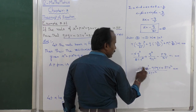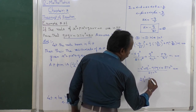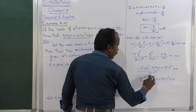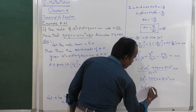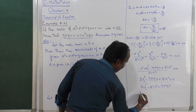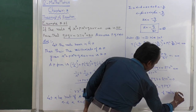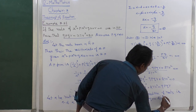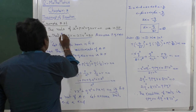Simplifying: -q³ + 3q³ gives 2q³, so we have 2q³ - 9pqr + 27r² = 0. Moving the negative term to the right side: 2q³ + 27r² = 9pqr. Therefore, the condition for the roots is 9pqr = 2q³ + 27r². This is the correct answer.